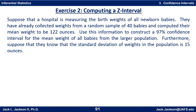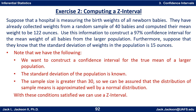Suppose that a hospital is measuring the birth weights of all newborn babies. They have already collected weights for a random sample of 40 babies and computed their mean weight to be 122 ounces. Use this information to construct a 97% confidence interval for the mean weight of all babies from the larger population. Furthermore, suppose that they know the standard deviation of weights in the population is 15 ounces.